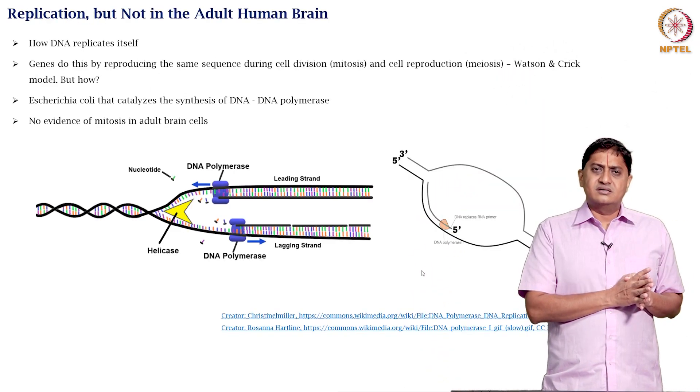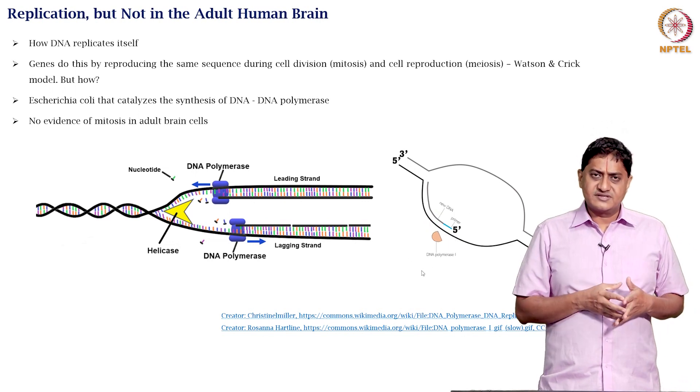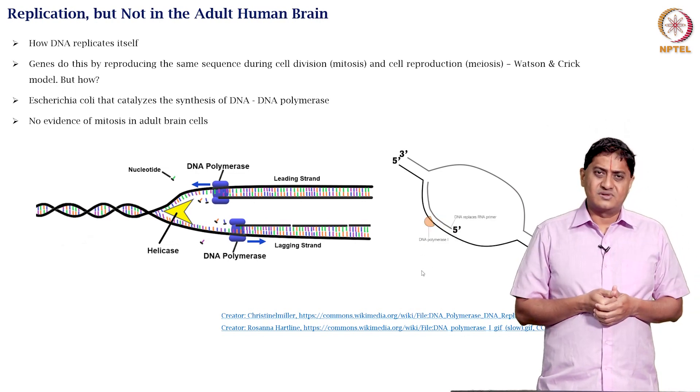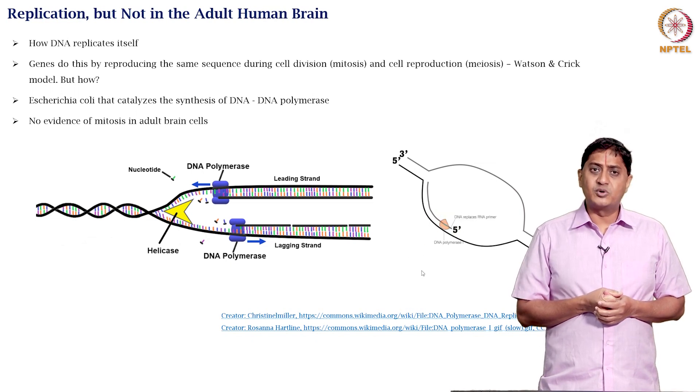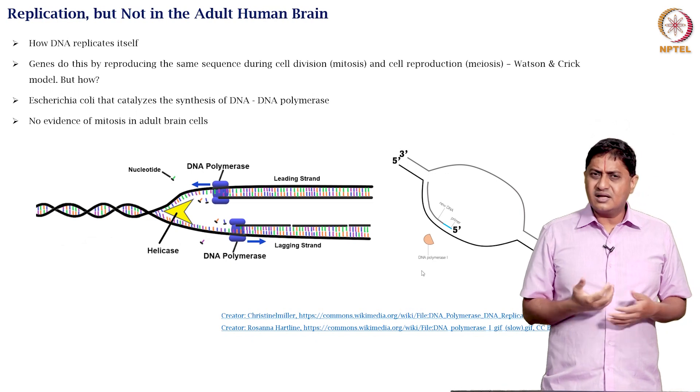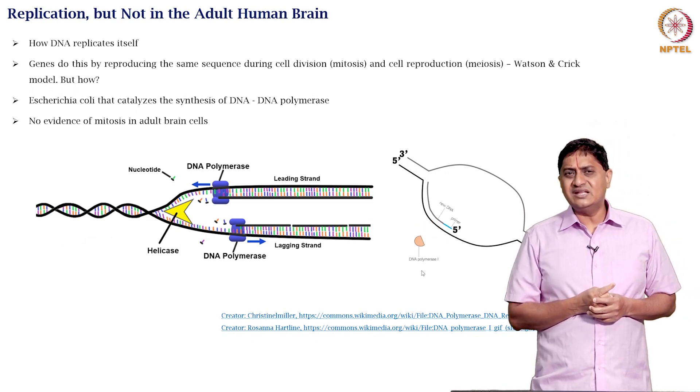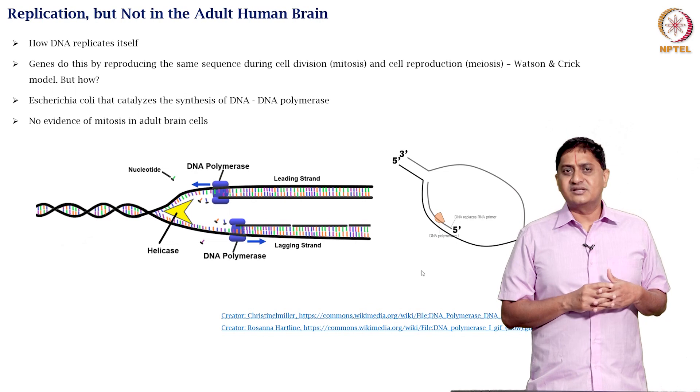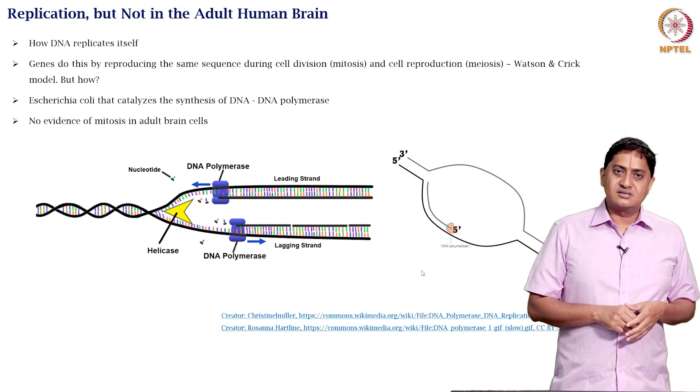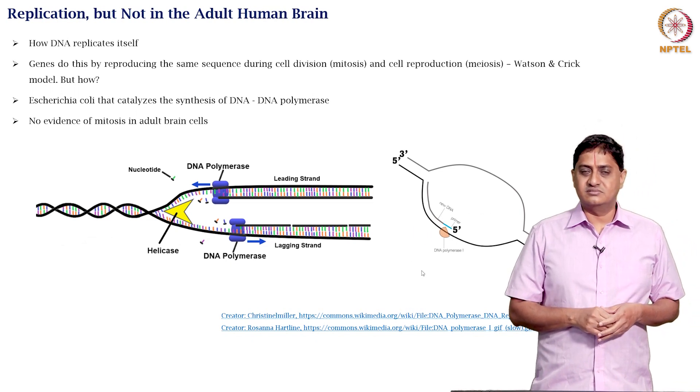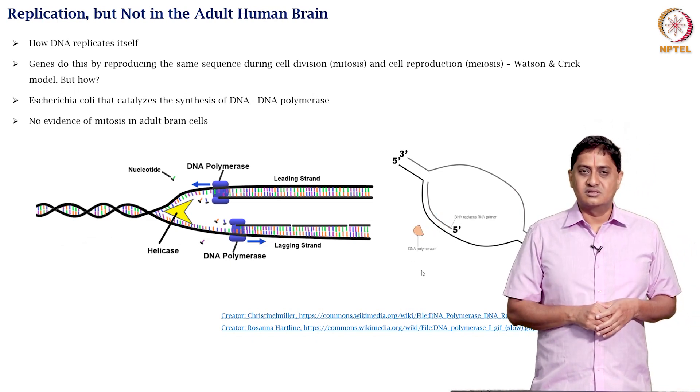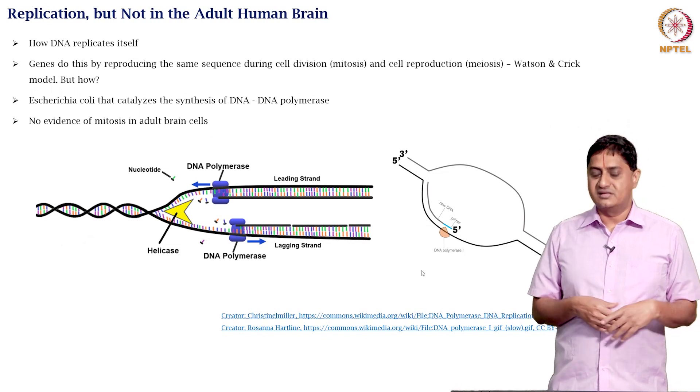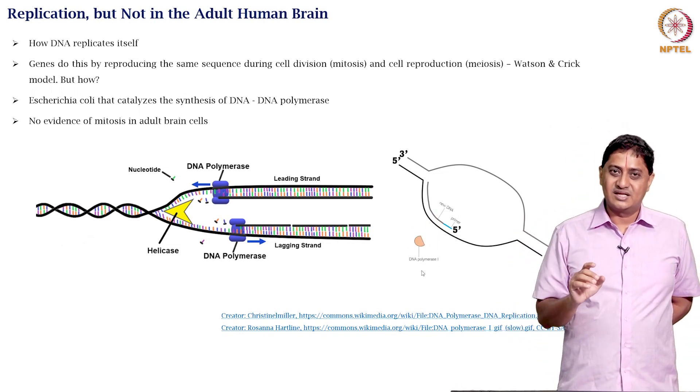On the one hand, we had a whole army of scientists attempting to break the code of how DNA makes proteins or how DNA plays a crucial part in protein synthesis. On the other hand, there was continued interest in how DNA replicates itself, because that is also crucial. Of course, from the Watson-Crick model, there is an understanding that DNA replicates itself using the regular ways in which this happens—that is mitosis and meiosis, cell division and cell reproduction—but exactly how? That was not yet found.